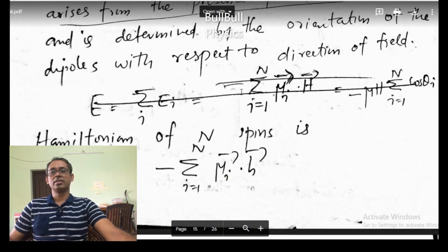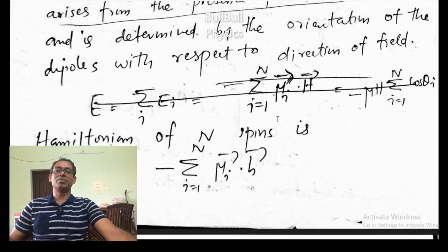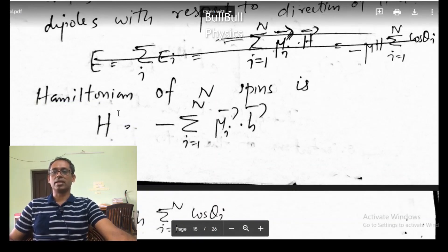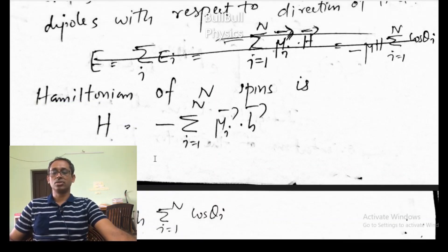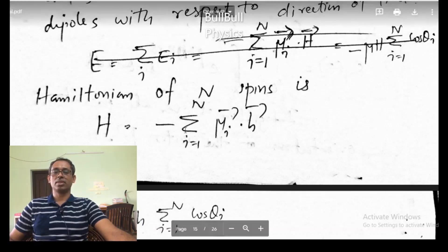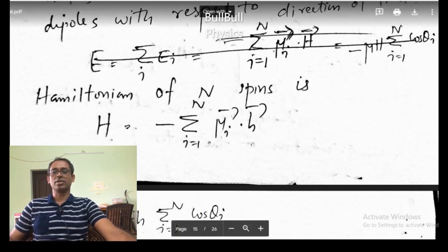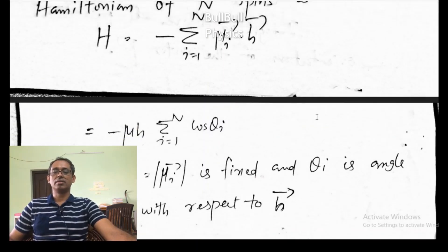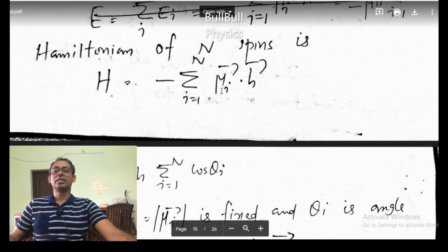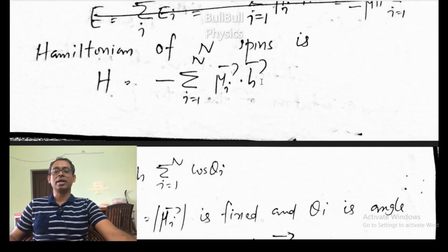The Hamiltonian in the case of N spins — we have a system of capital N dipoles — is given by minus of summation over i from 1 to N of mu_i dot H. This is the total energy of the system of N particles. This mu_i dot H can be written as mu H cos theta.